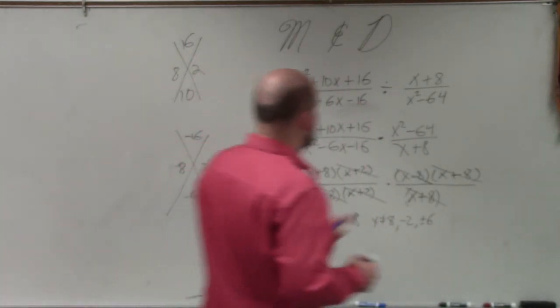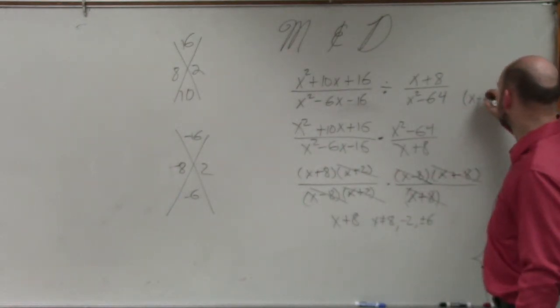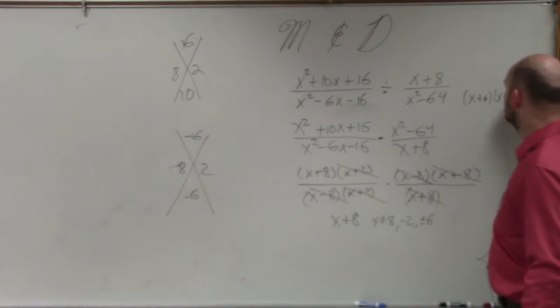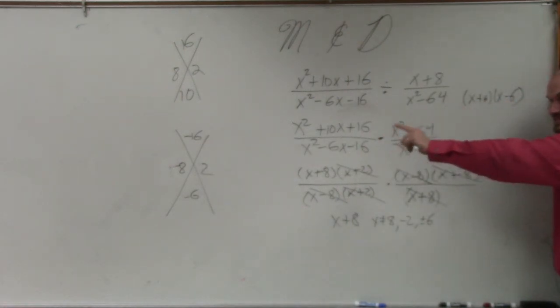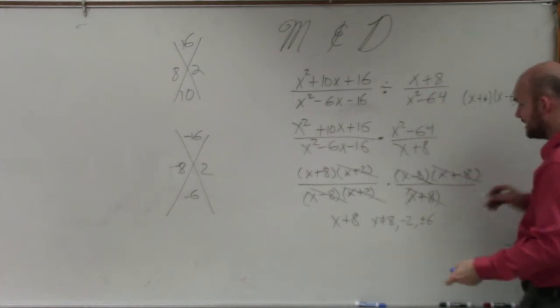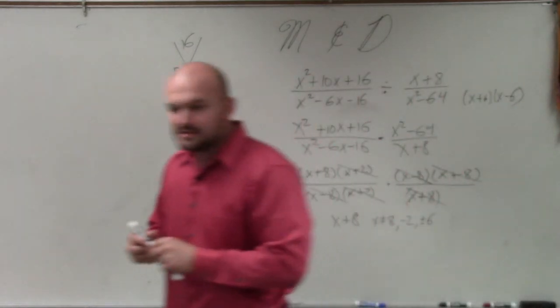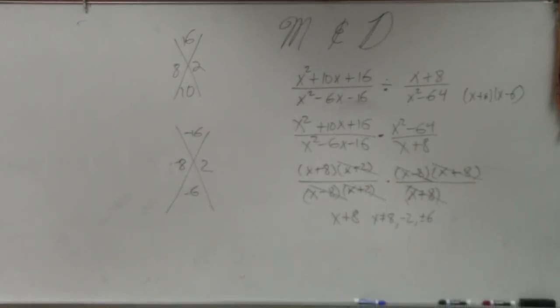Do you understand that x squared minus 64 is the same thing as x plus 8 and x minus 8? So if x is equal to negative 8, negative 8 plus 8 is what? Zero. Zero. So zero times anything is zero. If you have zero times this, that's zero. You can't have zero as your denominator. That's why x cannot equal negative 8. Same reason why x cannot equal positive 8. OK.